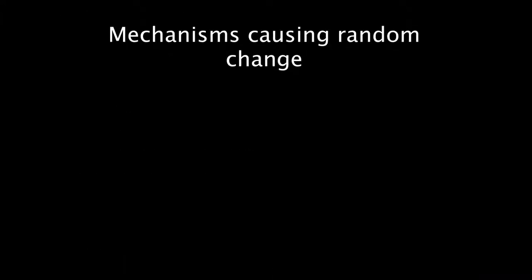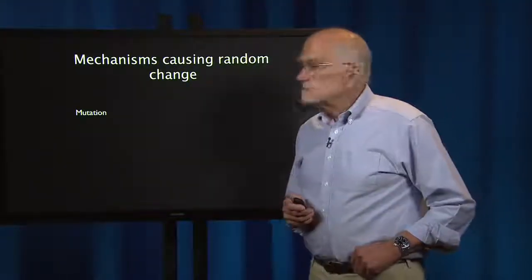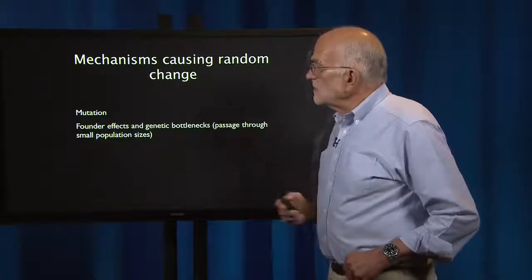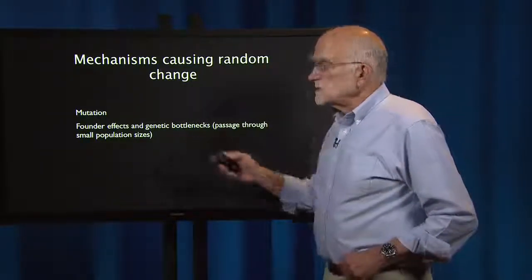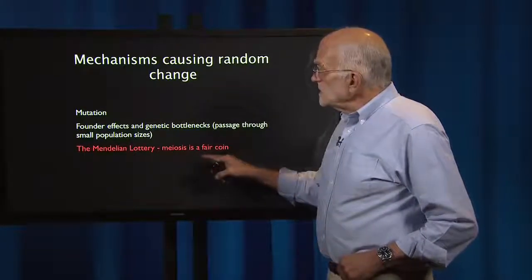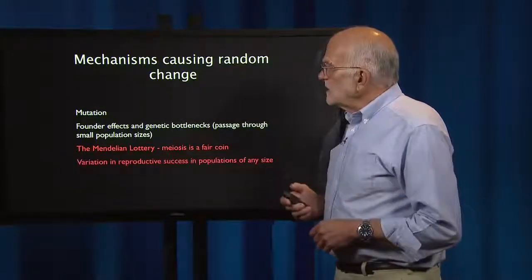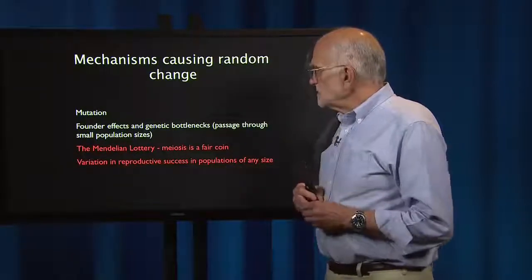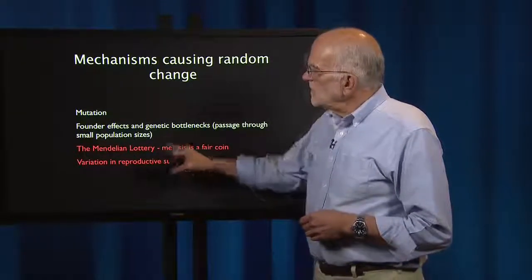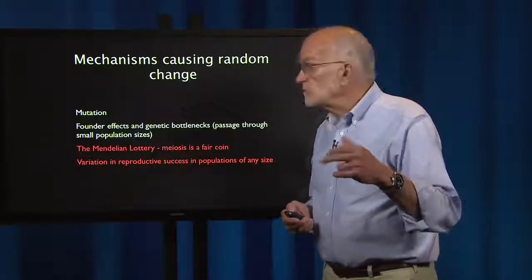We'll return to this in later lectures. We can see both the percentage of people with pneumonia in blue and the influenza-related mortality rate in red — the people who died were at their peak physiological fitness in midlife. So what are the mechanisms that cause random change? There is mutation, founder effects and genetic bottlenecks, the Mendelian lottery where meiosis is a fair coin, and variation in reproductive success. The factors contributing to genetic drift are highlighted.